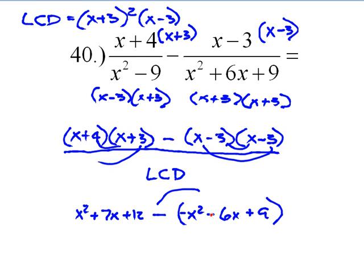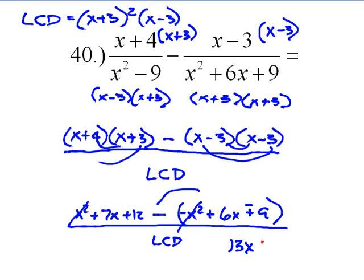So we have x squared plus 7x plus 12 minus, now let's see if I can do this much better. x squared minus 6x plus 9. That's much better. Now when we distribute the negative inside, this ends up a negative, x positive 6x and a negative 9.